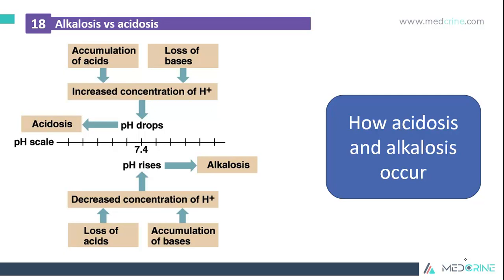Acidosis occurs when there is accumulation of acids or a loss of base in the blood, causing an increased concentration of hydrogen ions and dropping the pH levels below 7.35. Alkalosis occurs when there is a loss of an acid or an accumulation of a base, leading to decreased concentration of hydrogen ions in blood and a rise in pH.